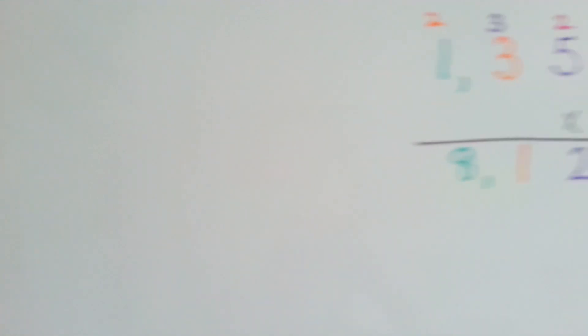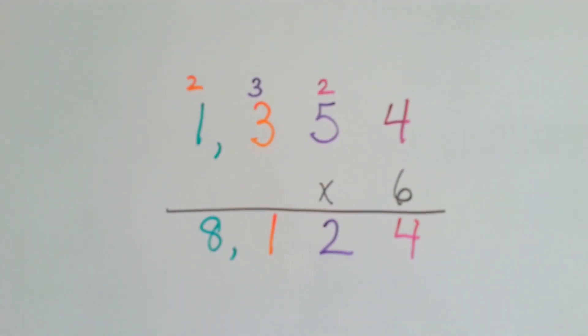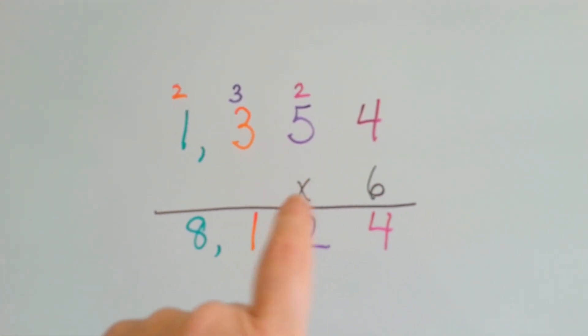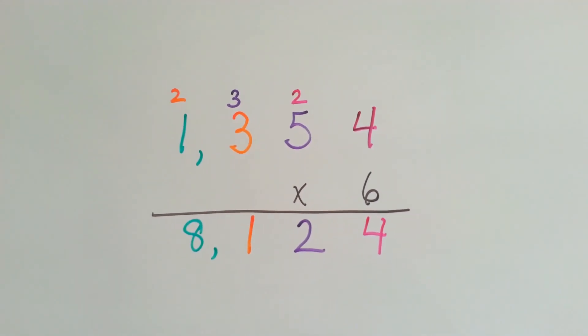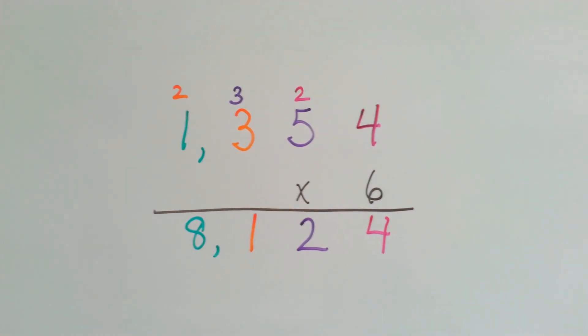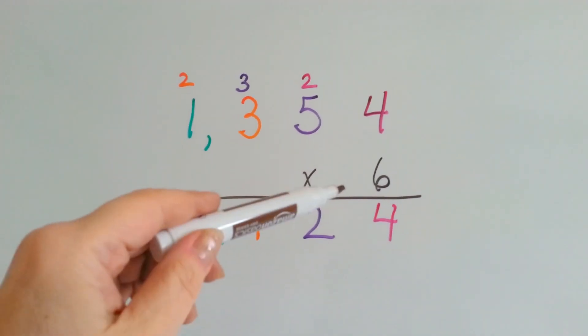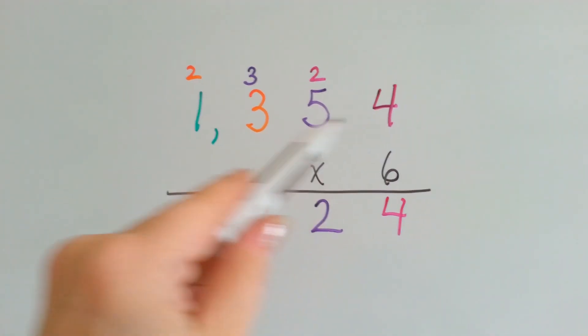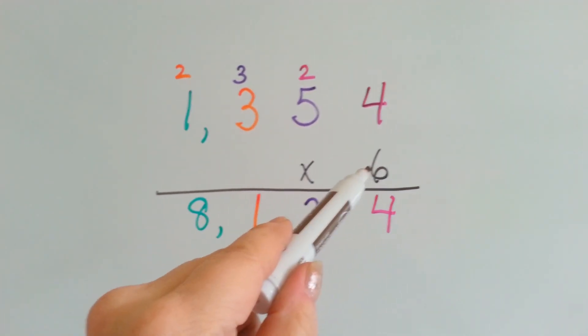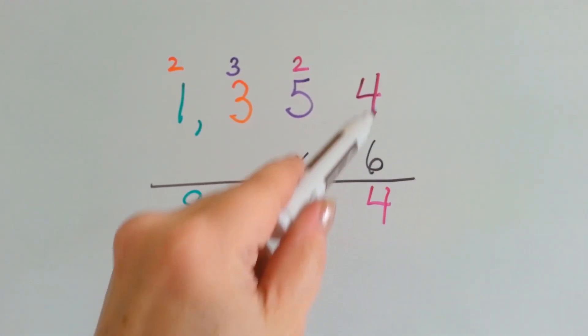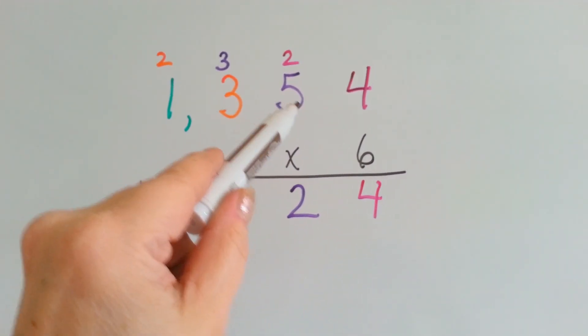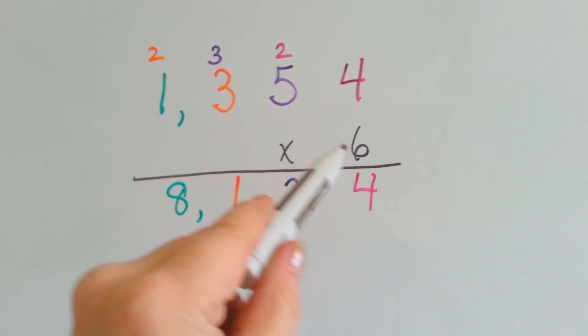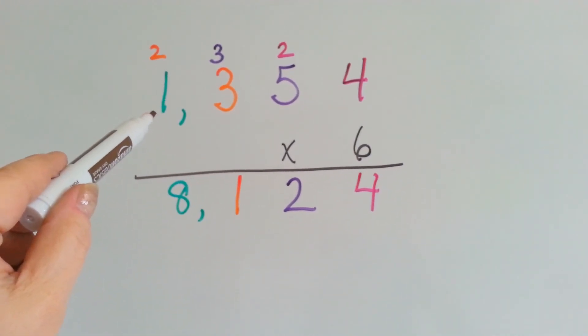Alright, let me show you this. We've got 1,354 times 6 and I did it in colors so you could see how I did it. When we have a big number and we're multiplying it by a one-digit number, we go in the ones place and multiply, then the tens place, then the hundreds place, and then the thousands place.